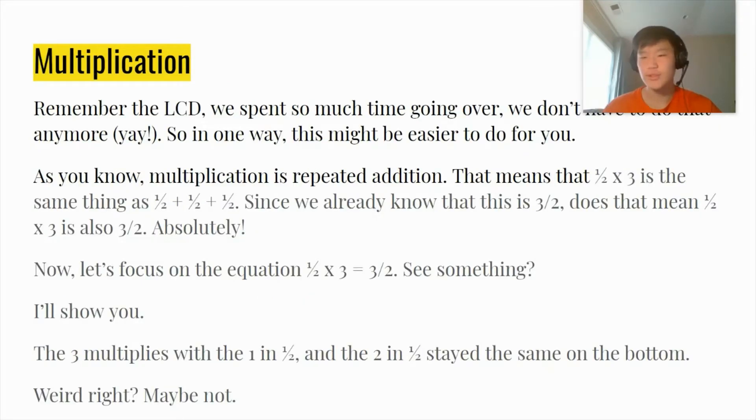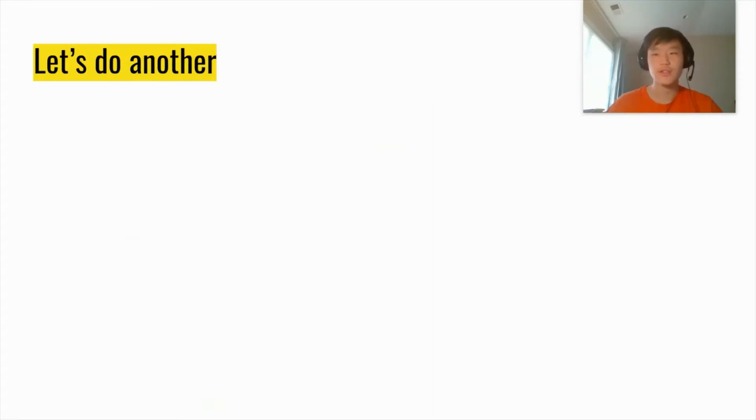Remember that LCD that we spent so much time going over? You don't have to do that anymore for multiplication. So in one way this might be easier for you. As you know, multiplication is repeated addition. That means that 1/2 × 3 is the same thing as 1/2 + 1/2 + 1/2. Since we already know that this is 3/2, does that mean 1/2 × 3 is also 3/2? Absolutely. Now let's focus on the equation 1/2 × 3 = 3/2. Do you see something? I'll show you. 3 multiplies with the 1 in 1/2 and the 2 in 1/2 stays the same on the bottom. Weird right? Maybe not.